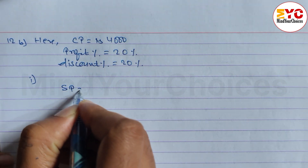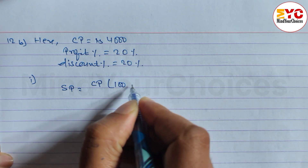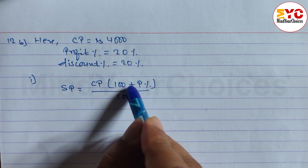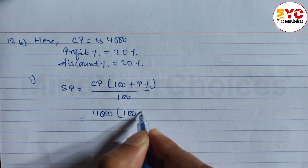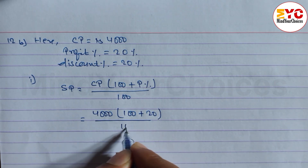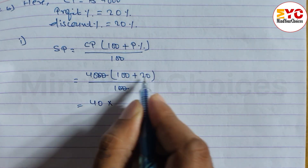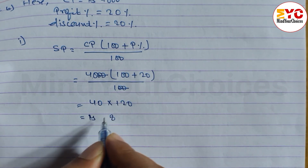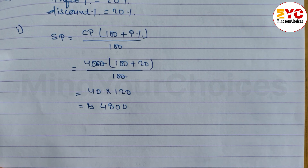To find SP, using the formula: SP = CP × (100 + profit%) / 100. CP is 4000, profit percent is 20. So SP = 4000 × 120/100. Multiplying: 4 × 120 = 480, so SP = Rs.4800.